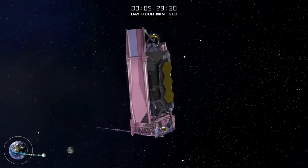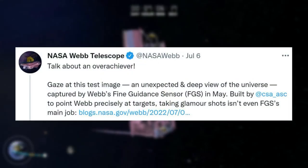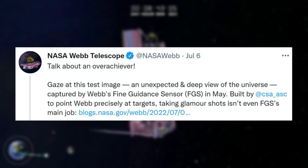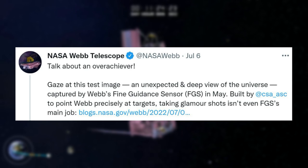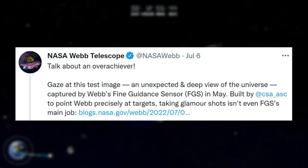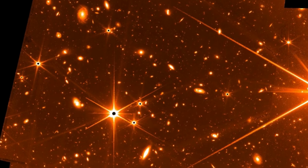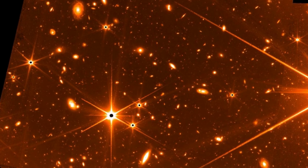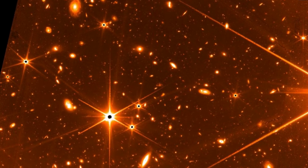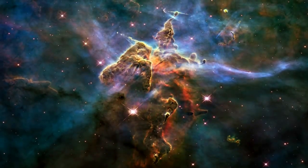Starting on July 6, NASA tweeted saying, talk about an overachiever. Gaze at this test image, an unexpected and deep view of the universe, captured by Webb's fine guidance sensor, FGS, in May. Built by CSA to point Webb precisely at targets, taking glamour shots isn't even FGS's main job. This tweet included a test image that was acquired in parallel with NIRCam imaging of the star HD 147980, over a period of eight days at the beginning of May. This engineering image represents a total of 32 hours of exposure time at several overlapping pointings of the Guider 2 channel. The observations were not optimized for detection of faint objects, but nevertheless the image captures extremely faint and is, for now, the deepest image of the infrared sky.